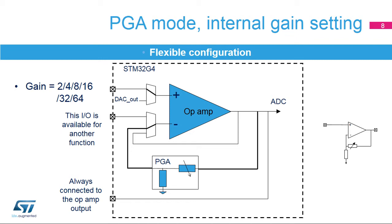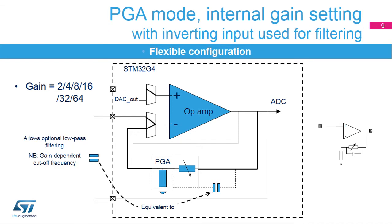It may also be beneficial to use the op-amp as an ADC input so that the full dynamic range of the analog-to-digital converter can be applied to signals having a small amplitude. The op-amps also support external connections on outputs and the non-inverting input to create the PGA mode, enabling the connection of an external capacitor to add low-pass filter characteristics to the PGA configuration.